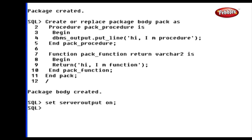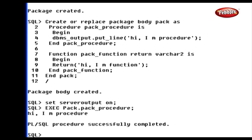We have created a package 'pack' with a procedure and a function. Now we are going to call this package. Before calling this package, we must set the server output variable to ON: SET SERVEROUTPUT ON. The 'EXEC' command is used to execute the package. To execute the procedure inside the package, write: EXEC Pack.PackProcedure and press Enter. The procedure executes and displays the message 'Hi, I'm Procedure' on the screen.